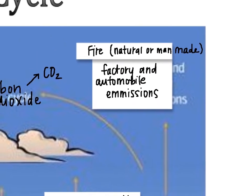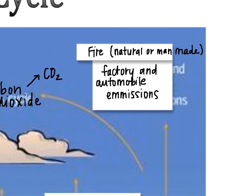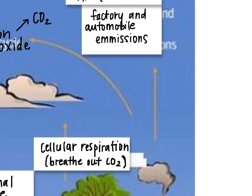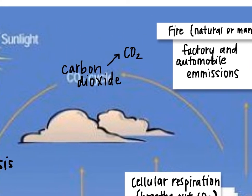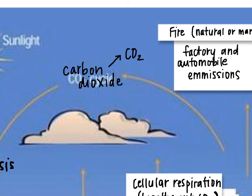The other way that carbon can get released back up into the air is through factory or automobile emissions, or basically any kind of fire. Anything that's combustion or creating smoke is releasing carbon dioxide into the air. That fire can be natural or man-made — forest fires, for example, would be a natural type of fire if caused by lightning. Carbon in the air is always in the form of carbon dioxide, which is CO2.